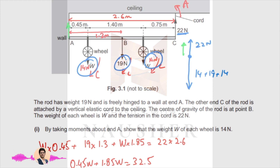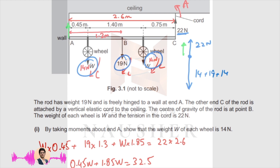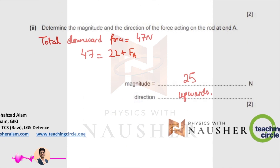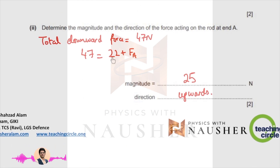That additional force is the vertical force acting at point A. The total downward force is 47 Newtons. The upward force is 22 plus the force at A, so the force at A is 25 Newtons acting upwards.